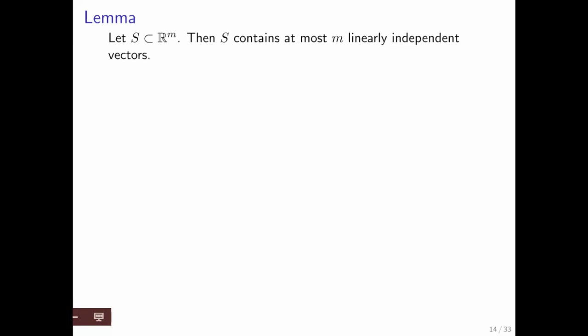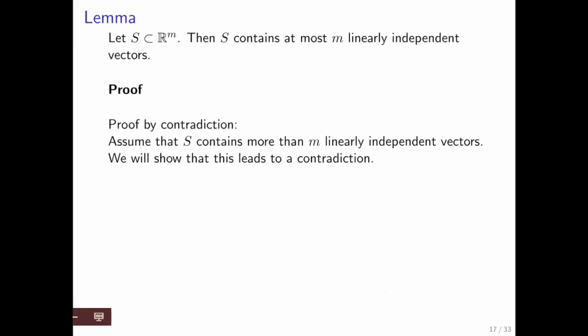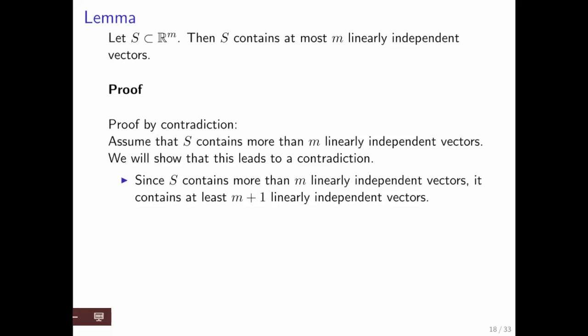Here's a lemma. If we have a set of vectors in R^n, and this could be a subspace but it doesn't have to be, then S can contain at most m linearly independent vectors. A proof? A proof by contradiction. Assume that S contains more than m linearly independent vectors. We're going to show that that leads to a contradiction.